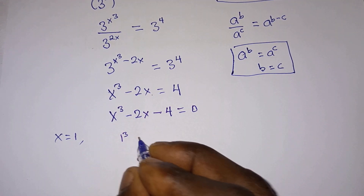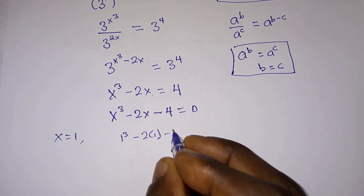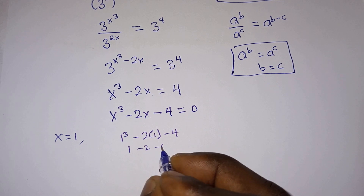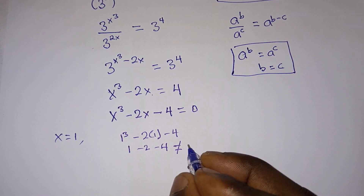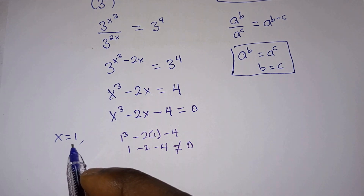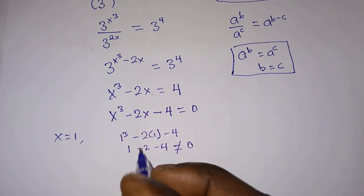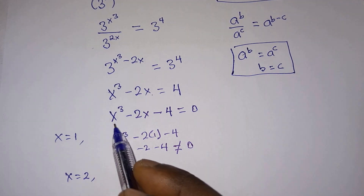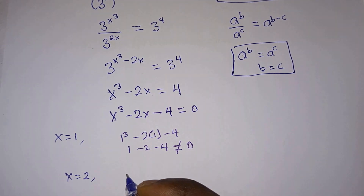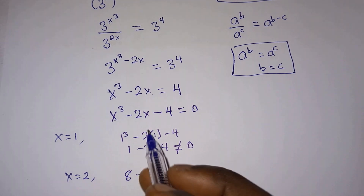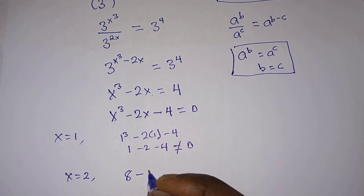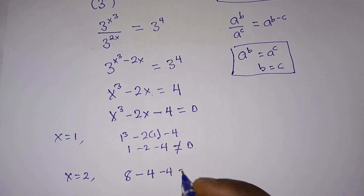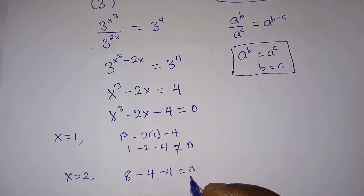Substituting x equals 1: 1 cubed minus 2 times 1 minus 4 gives 1 minus 2 minus 4, which is not zero. So x equals 1 doesn't work. Let's try x equals 2: 2 cubed minus 2 times 2 minus 4 gives 8 minus 4 minus 4, which equals 0.